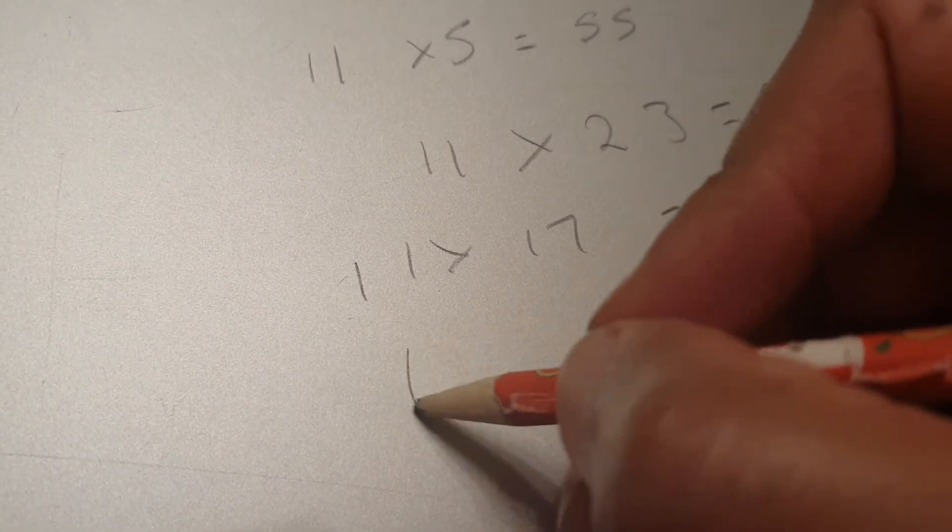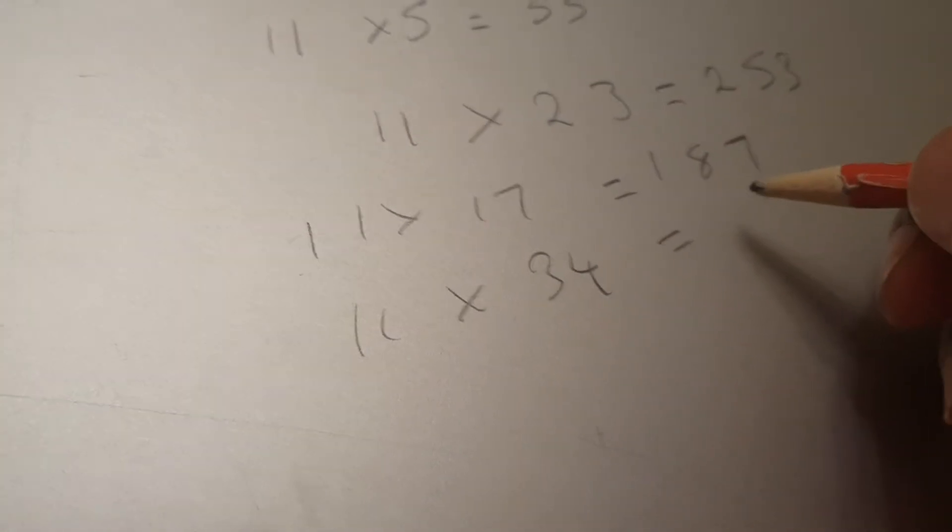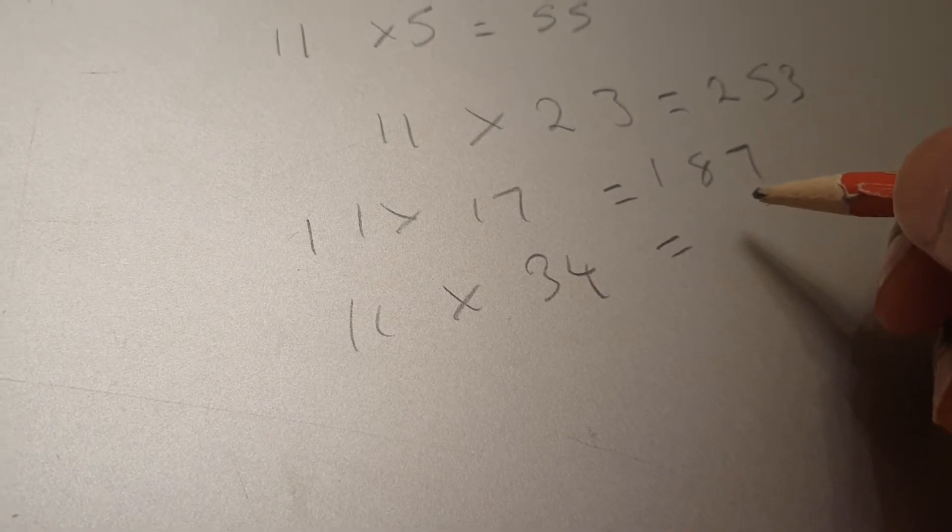One final one. Maria, 11 times 34 equals... 374.